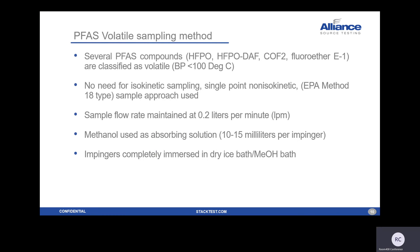There's also a volatile PFAS sample method, comprised of PFAS compounds with a boiling point less than 100 degrees Celsius, which is the threshold used. Given the gaseous nature of these compounds, there's no need for isokinetic sampling — a single-point non-isokinetic approach is used, similar to Method 18. A low flow rate of 0.2 liters per minute is used. Methanol is used as the absorbing solution, and the impingers are completely immersed in a dry ice bath.